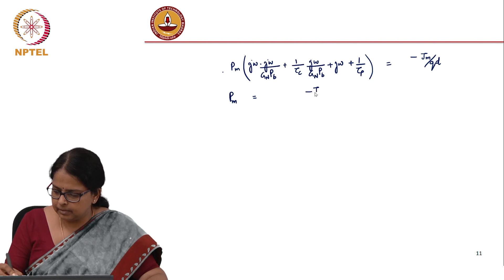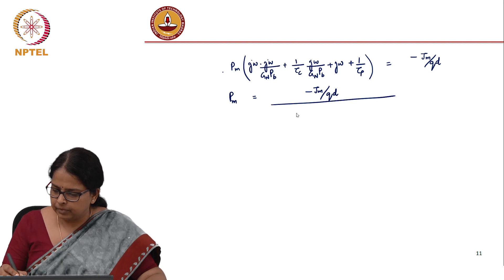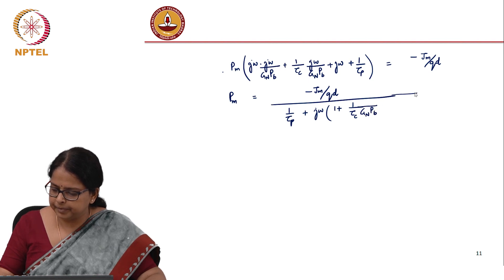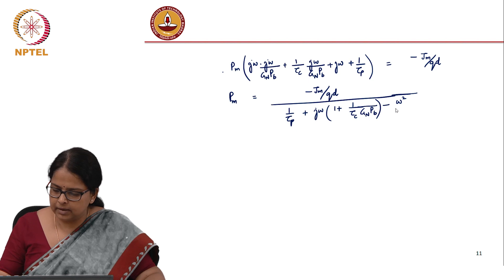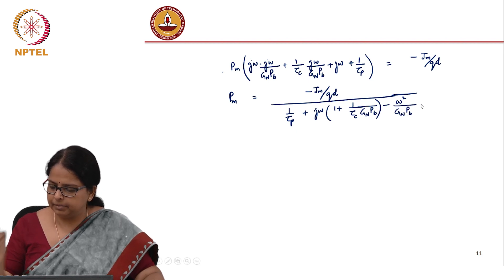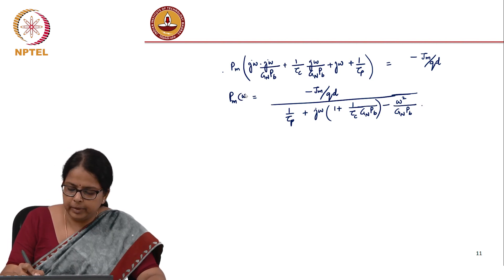My p_m is 1/(tau_p) + j*omega*(1 + 1/(tau_c*g_n*p_b)) minus omega^2 divided by... this is p_m at omega.